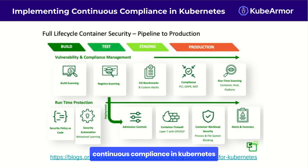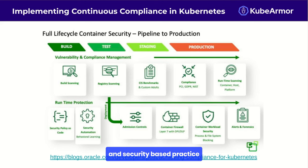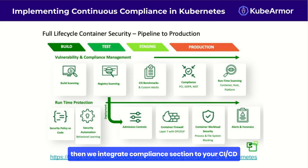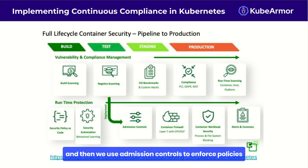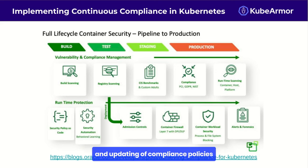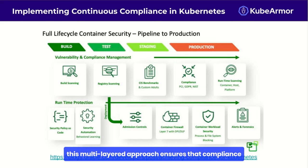To achieve continuous compliance in Kubernetes, you should: define compliance policies based on your regulatory requirements and security best practices, implement automated scanning tools that run at regular intervals or trigger on specific events, integrate compliance checks into your CI/CD pipeline to catch issues before deployment, use admission controls to enforce policies at the cluster level, implement logging and monitoring to track compliance status over time, and establish a process for regular review and updating of compliance policies. This multi-layered approach ensures compliance is an ongoing, integral part of your Kubernetes operations.